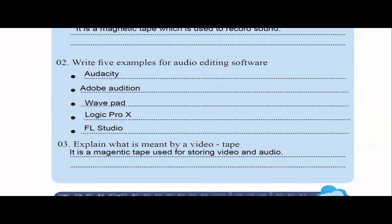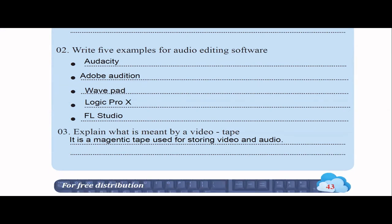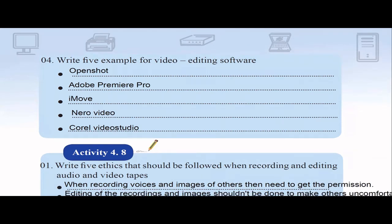A video tape is a magnetic tape used to store both audio and video together, like in a movie. For video editing, I personally use OpenShot. The textbook mentions Adobe Premiere Pro. Additional video editing software includes iMovie, Nero Video, and Corel Video Studio. These are valid answers for this activity.